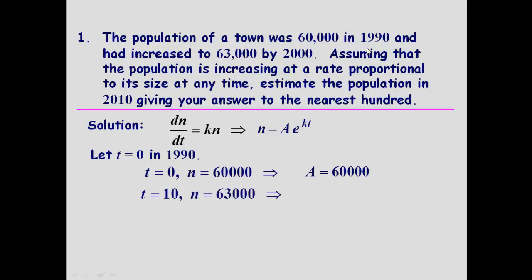We know that 10 years later, in other words t equals 10, that n is 63,000. So we can now put all that information in here, and that will enable us to work out k. We know what n is, 63,000. We know that A is 60,000, e, and we know t is 10. So the only unknown will be k.